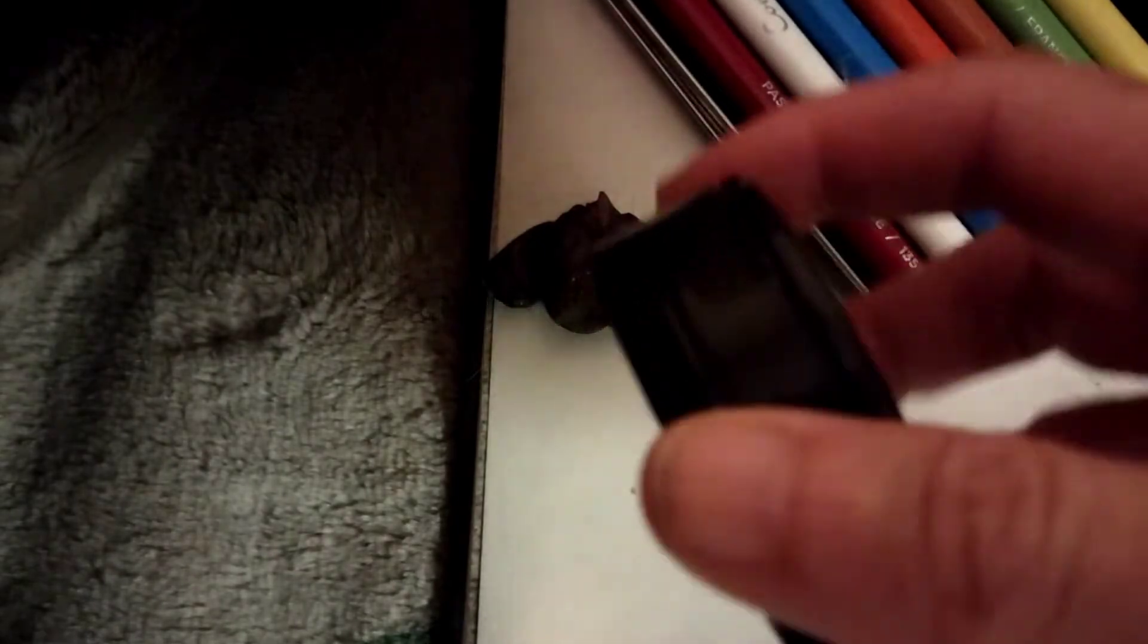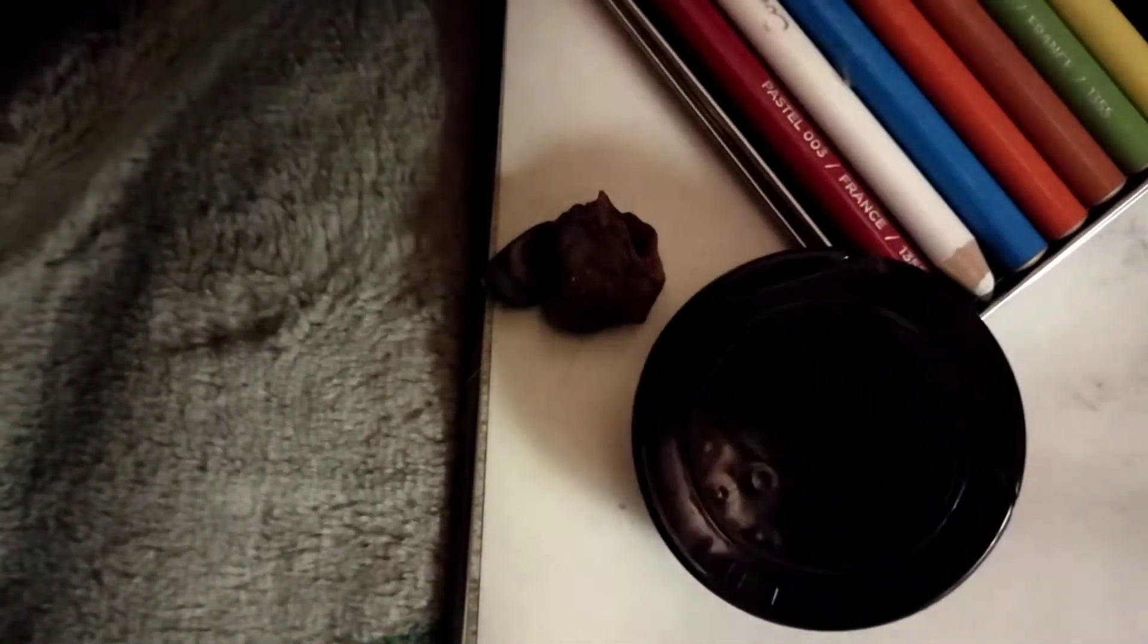Even this is the lid of a seasoning bottle. There's the seasoning right on top, so I just unscrewed this from the seasoning bottle and I'm going to use it to make a circle.